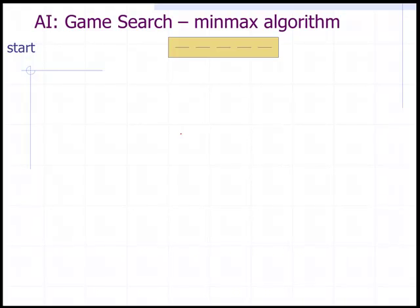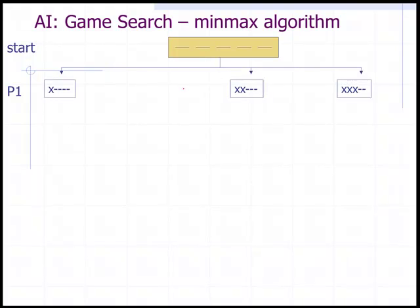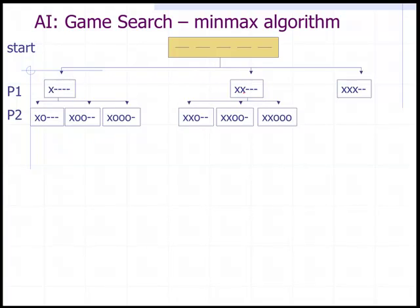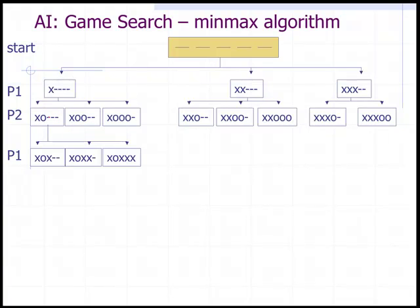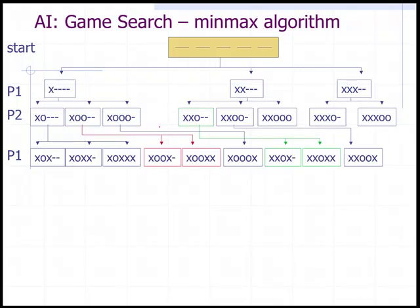We start with an empty game state with five spaces. On the first move, player one (the computer) has three options: place one X, two X's, or three X's. At the next level, player two has sets of moves for each of those choices. Notice at this level some games are already won, but others are unfinished, so we keep going down the tree. Player one then has further options at the next level, and so on, expanding all possibilities.